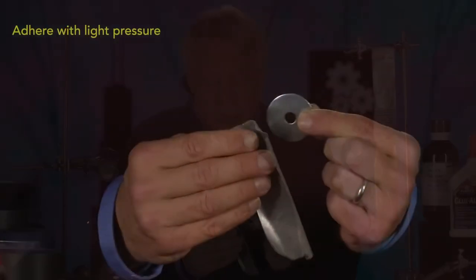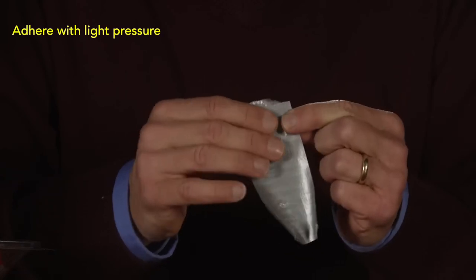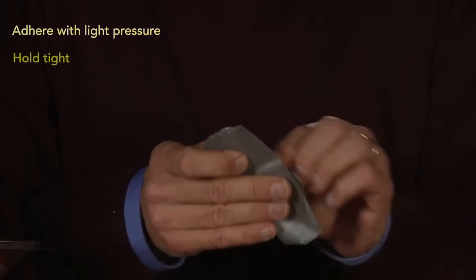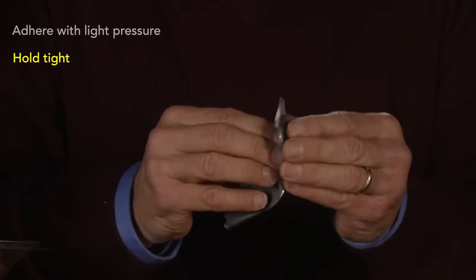Duct tape is astonishingly well-engineered to do three things: stick to a surface when a bit of pressure is applied, securely hold two things together, and then be removed without leaving adhesive residue.